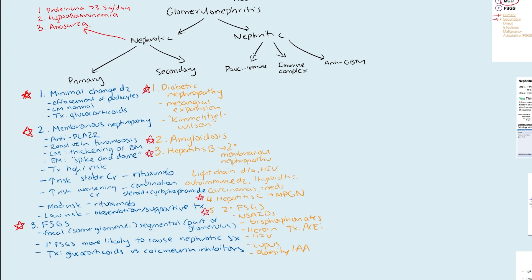For nephritic syndrome, the best way to classify is based on the framework: pauci-immune, immune complex, and anti-GBM. The main thing to start with is to know the different incidences: pauci-immune nephritic syndrome happens about 60% of the time; immune complex related nephritic syndrome is about 20%; and anti-GBM is about 10%. For pauci-immune, you're really thinking about all the ANCA vasculitides — granulomatosis with polyangiitis (Wegener syndrome), associated with PR3 and C-ANCA; microscopic polyangiitis, associated with MPO and P-ANCA; and EGPA (Churg-Strauss syndrome), which you see with a lot of allergies and eosinophilic deposits. Notably, all of these have a normal complement level.